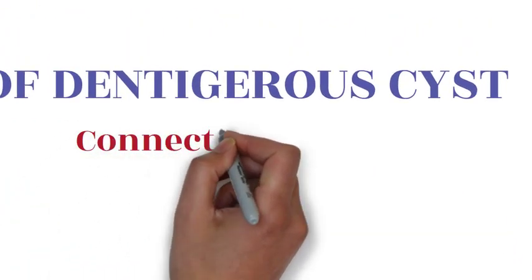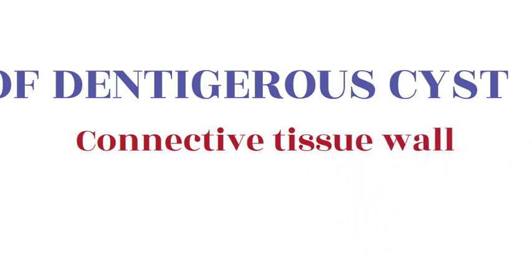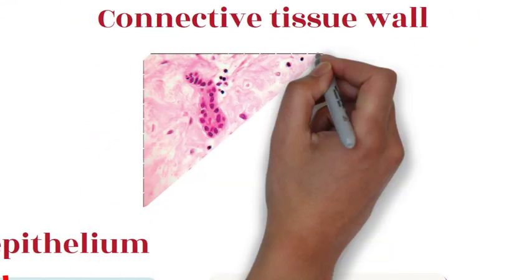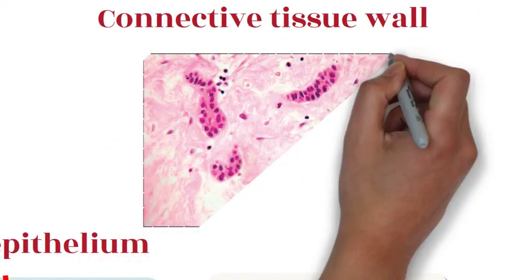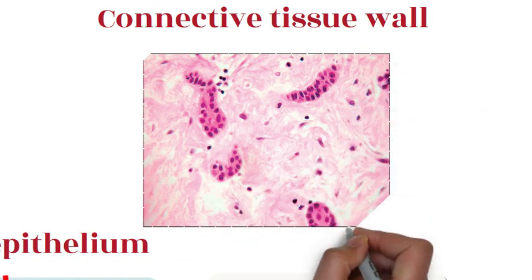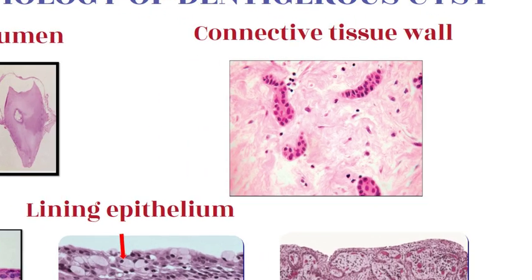The fibrous cyst wall is derived from the dental follicle and exhibits fibroblasts separated by a stroma rich in acid mucopolysaccharide. There is also evidence of nests or strands of odontogenic cells in the connective tissue wall.